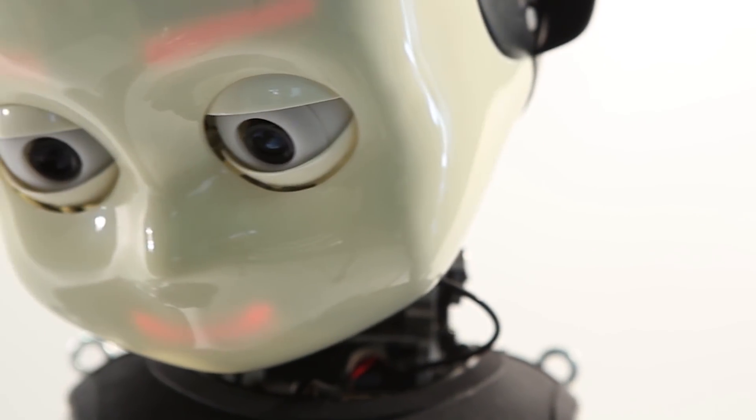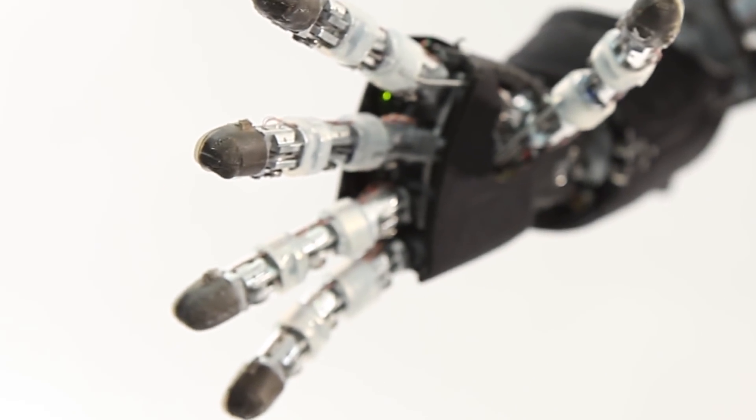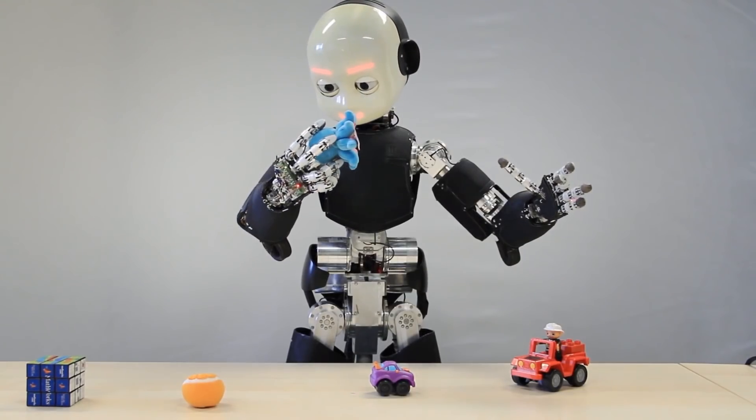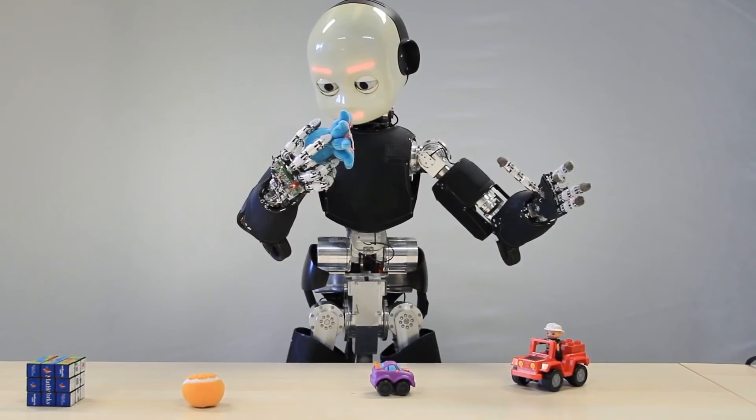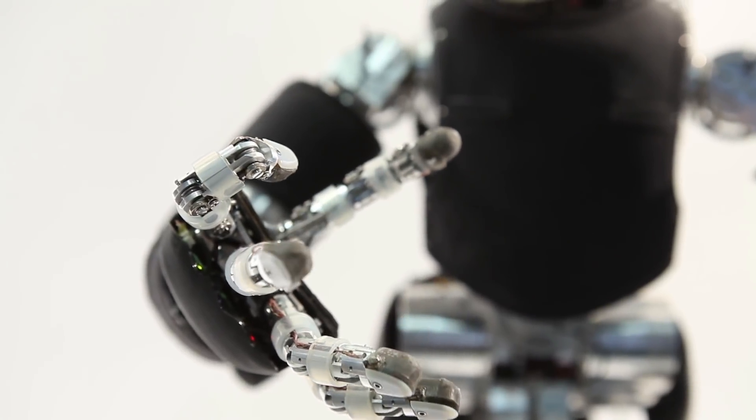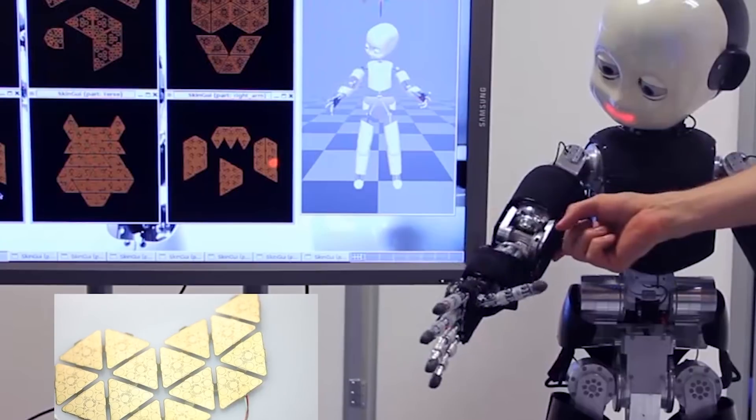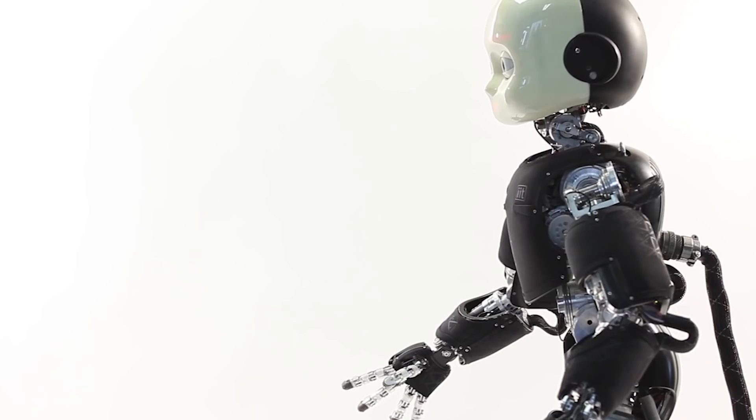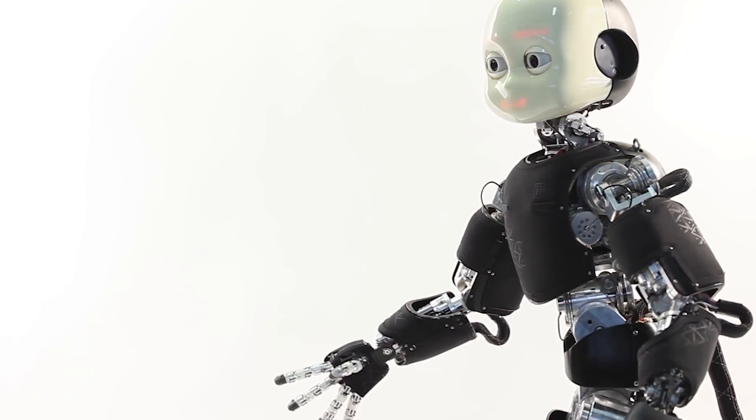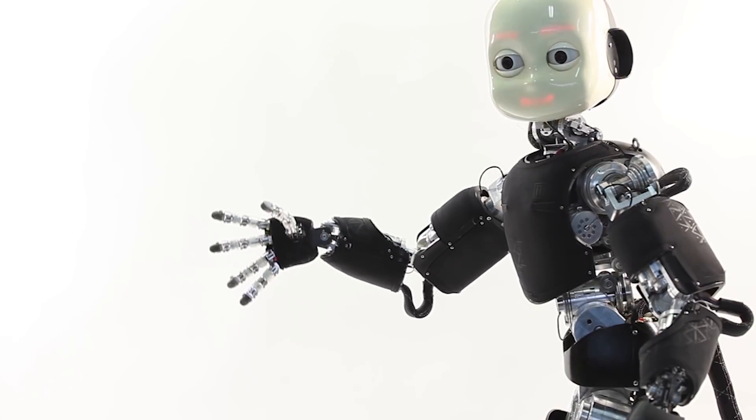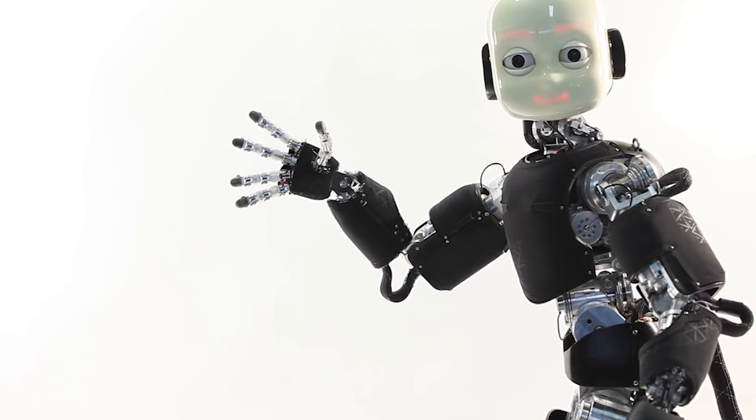iCub is the hardware that houses the artificial intelligence software that powers it. The robot can observe its environment through camera eyes and microphone ears, touch sensors in the hands, and a skin made of printed circuit capacitors. The motivation for creating iCub is to give AI not only a voice, but also a body.